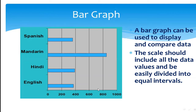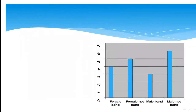This is the way we compare — we can compare languages, subjects, or compare female and male. A bar graph can be used to display and compare data, and the scale should include all data values divided into equal intervals. Now look at this next example.